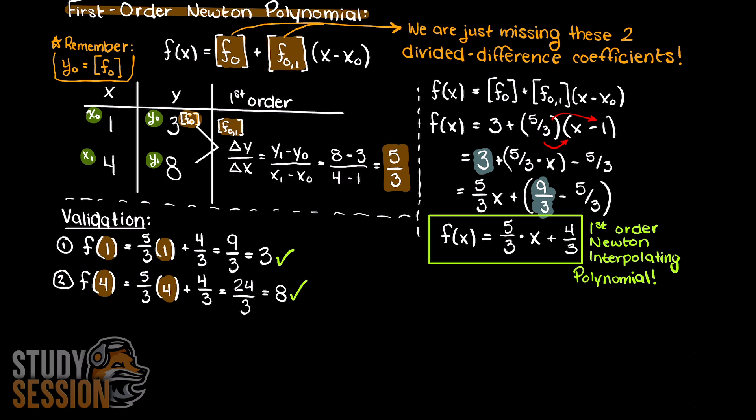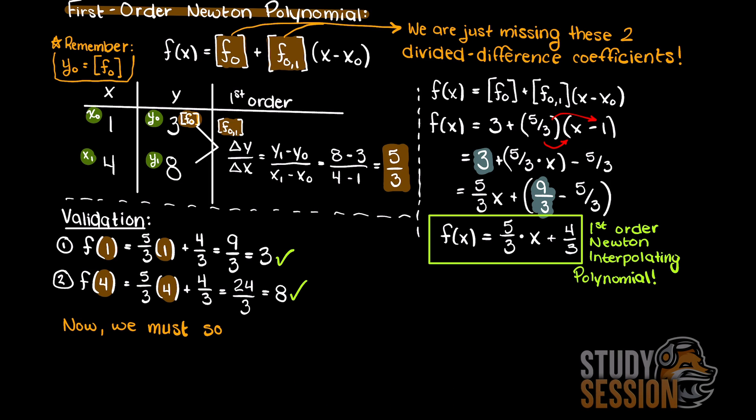Lastly, we are asked to solve for the output of our Newton polynomial for an input of 2. This results in an output of 4.66 repeating, and that is the answer to the question we were initially asked.